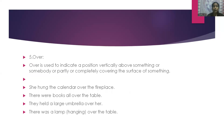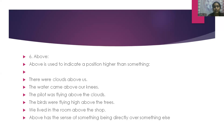The next word is 'over'. Over is used to indicate a position vertically above something, or somebody, or partly or completely covering the surface of something. For example: she hung the calendar over the fireplace. There were books all over the table. They held a large umbrella over her. There was a lamp over the table. 'Above' is used to indicate a position higher than something. For example: there were clouds above us. The water came above our knee. The pilot was flying above the clouds.